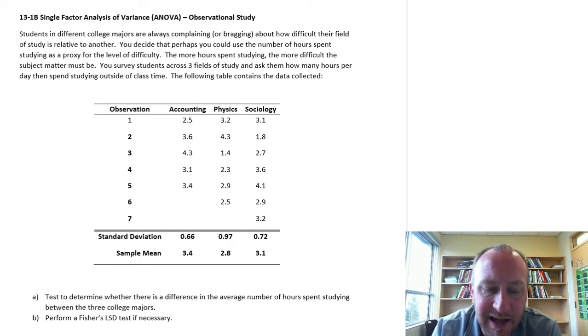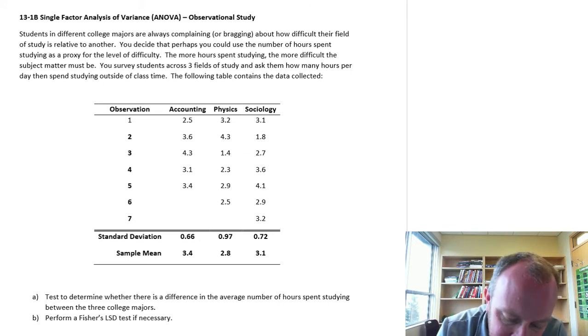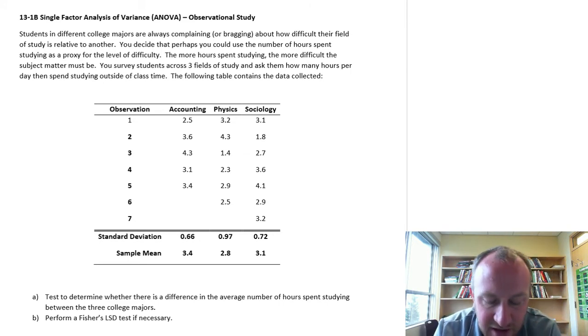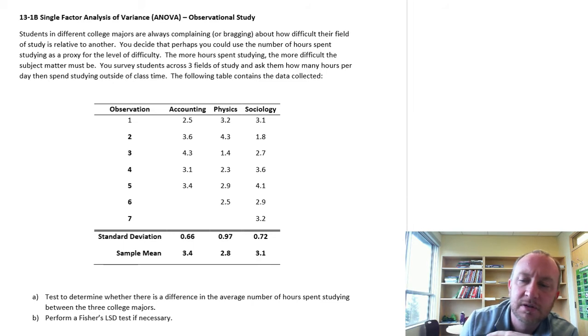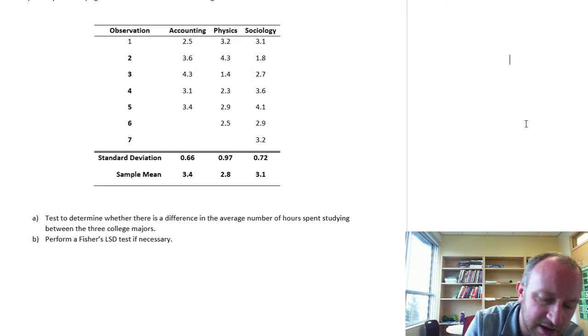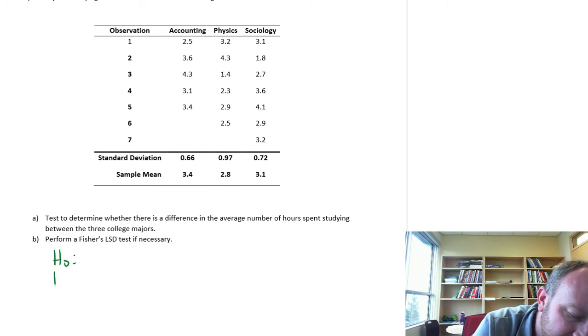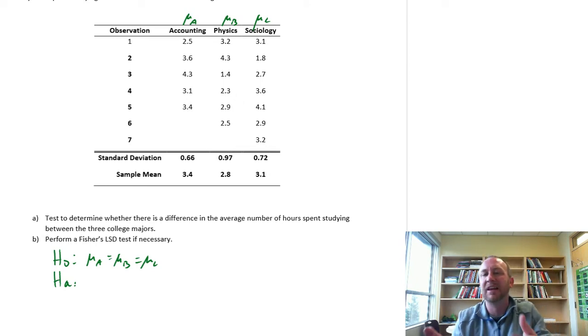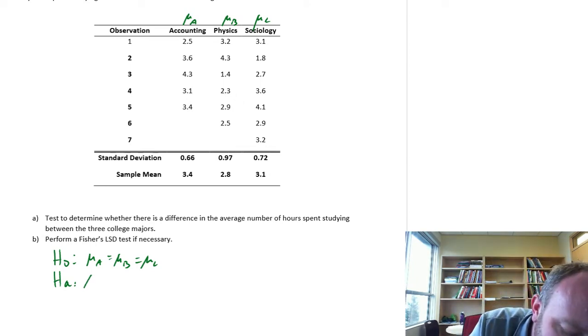Now let's get into part A, test to determine whether there is a difference in the average number of hours spent studying between these three college majors. Okay so what we're gonna do, I'm gonna scroll down here and we'll start at the bottom here. So what is our null and alternative? Well I have three treatments. Call this one mu A, mu B, mu C. So our null is always that all of them are equal. There's no difference in level of difficulty or no difference in average number of hours spent. The alternative is not all are equal. At least one of them is different.